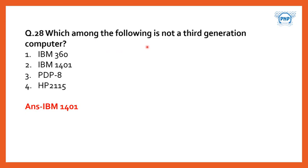Which among the following is not a third generation computer? The answer is IBM 1401.